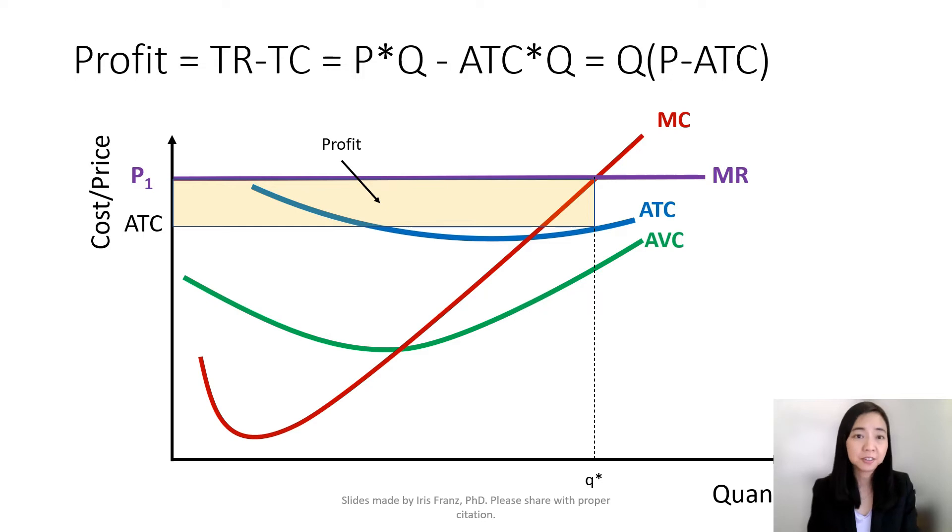Recall that profit is equal to total revenue minus total cost. Total revenue is also equal to price times quantity, and total cost is also equal to average total cost times quantity. And therefore, your profit is equal to quantity times price minus average total cost.